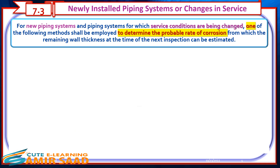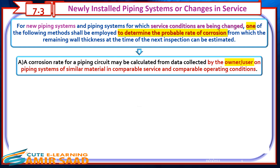Newly Installed Piping Systems or Changes in Service. For new piping systems and piping systems for which service conditions are being changed, one of the following methods shall be employed to determine the probable rate of corrosion, from which the remaining wall thickness at the time of the next inspection can be estimated. A corrosion rate for a piping circuit may be calculated from data collected by the owner or user on piping systems of similar material in comparable service and comparable operating conditions.